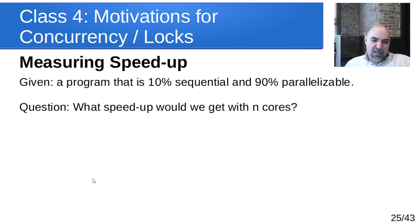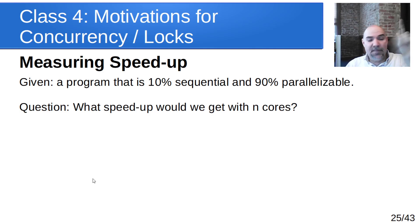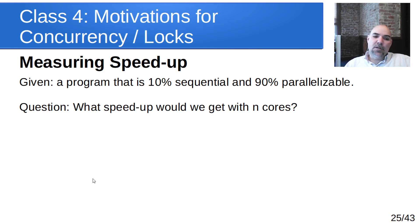If we can come up with a percentage — some part of the program is sequential, some part can run concurrently — we can compute expected speedup. Let's take an example of a program that is 10% sequential and 90% parallelizable. In other words, 90% can run concurrently on multiple cores and 10% has to be sequential — like startup code, initialization, gathering results, and saving to a file. The question is: what speedup will we get with n cores?